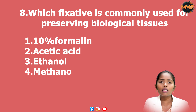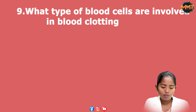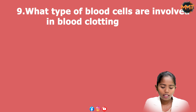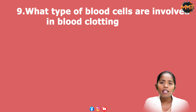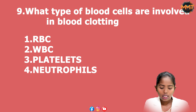10% formalin is used in pathology labs to preserve tissues for up to 10 years. Question 8: What type of blood cells are involved in blood clotting? Options: 1. RBCs, 2. WBCs, 3. Platelets, 4. Neutrophils.